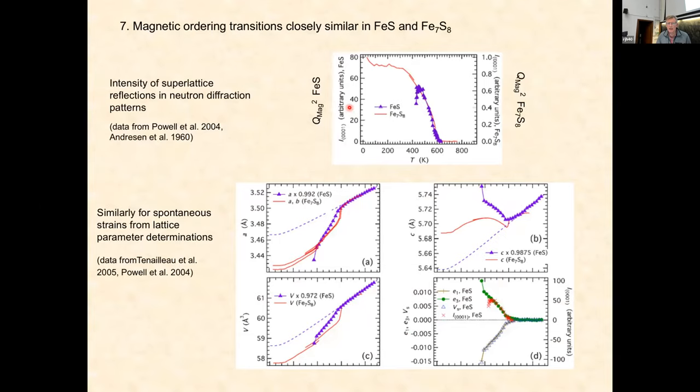Back to things that will be more familiar, let's look at FeS and Fe7S8. On the left-hand side I've got the square of the magnetic order parameter for FeS, and on the right I've got Fe7S8. You scale them and you see they're identical. So the ordering in Fe7S8 is no different from that ordering in FeS.